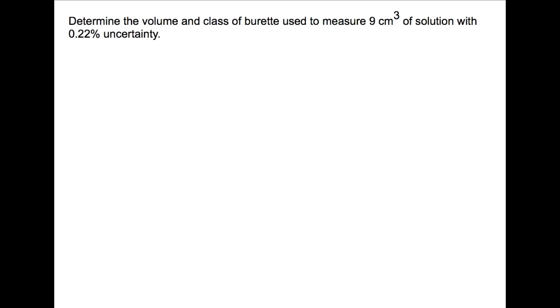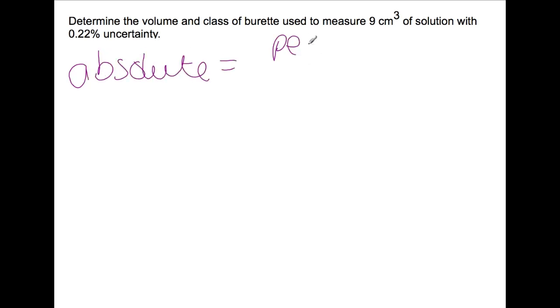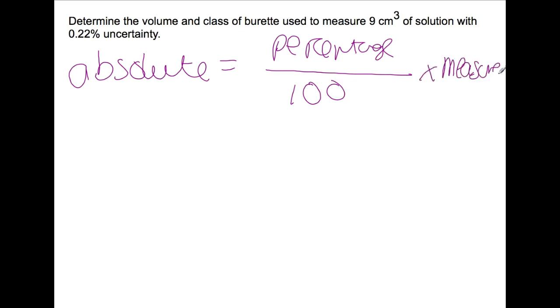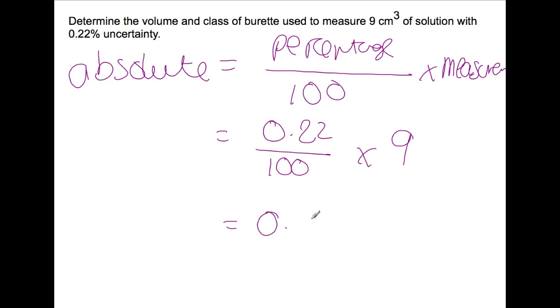Let's look at going the other way — calculating absolute uncertainties. Here we have a burette used to measure 9 cm³ of solution, and we know the percentage uncertainty is 0.22%. We're trying to calculate the volume and class of burette used. To calculate an absolute uncertainty, we take the percentage uncertainty, divide by 100, and multiply by the measurement. So 0.22 divided by 100 times 9 gives us an absolute uncertainty of 0.02. Looking at the table, this means we must have used a 10 ml class B burette.